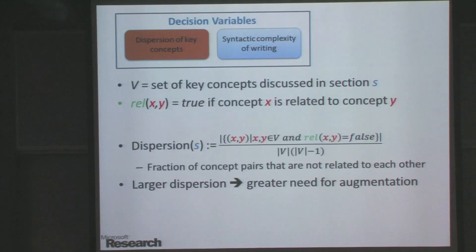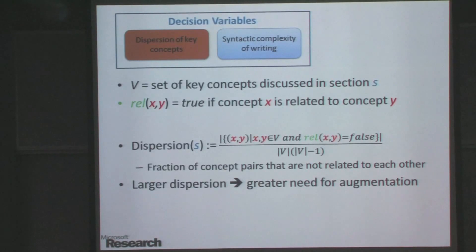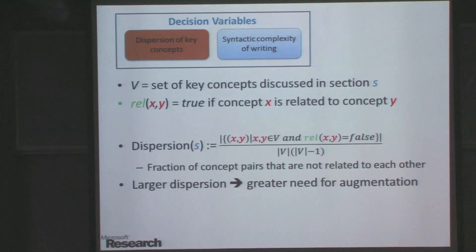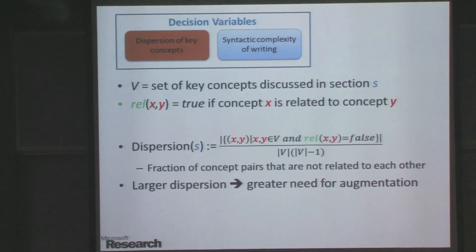The relationship is asymmetric. A very specialized concept can be thought of as related to a general concept, but it may not hold the other way. For instance, this workshop on algorithms has a strong relation to Rutgers because it's held at DIMACS which is part of Rutgers, but when you think of Rutgers as a university, this workshop may not be the first thing that comes to mind. So the relationship can be asymmetric.